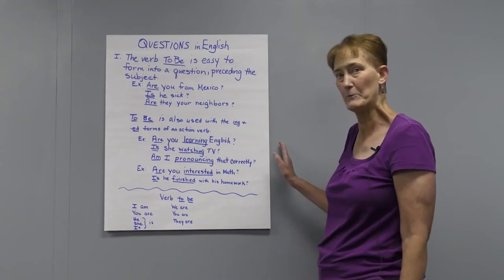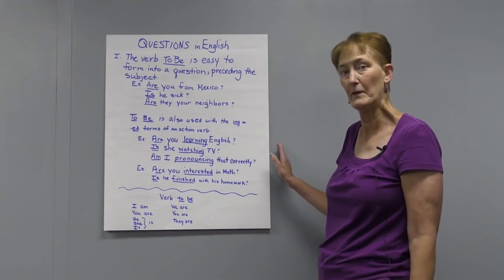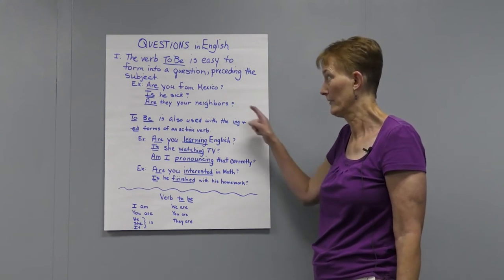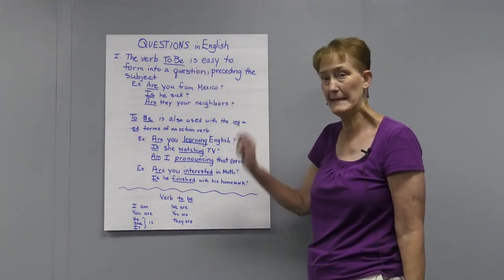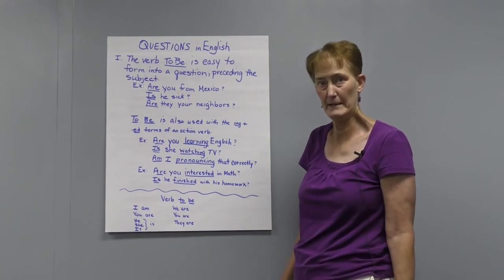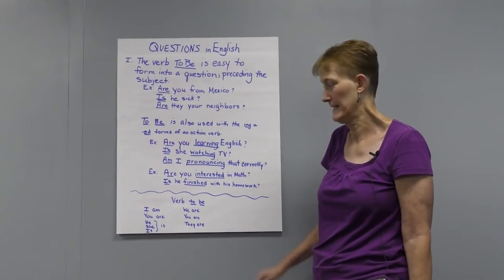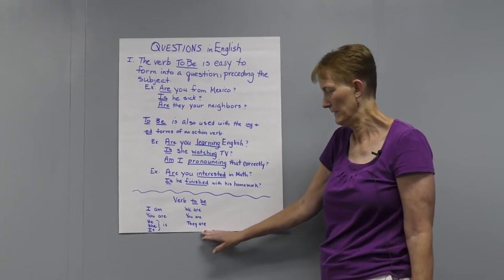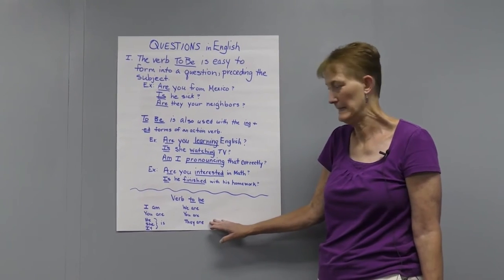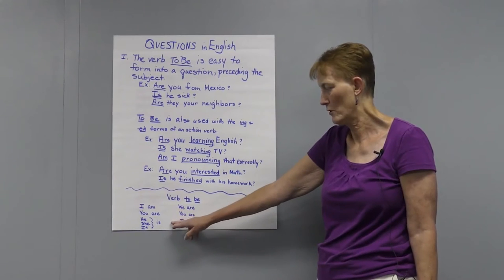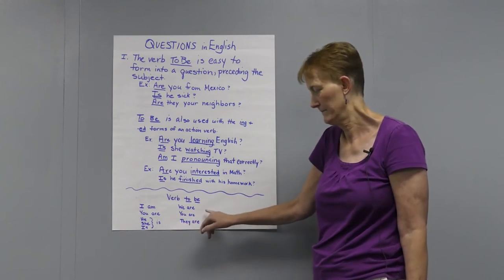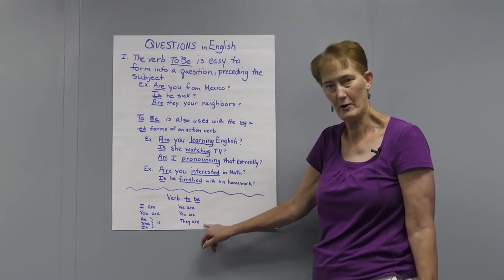Hello. Today we'll be dealing with how to form questions in English. Now the verb to be is really easy to form into questions. And down here, if you don't know the forms, this is the verb to be: I am, you are, he, she, or it is, we are, you are, they are.